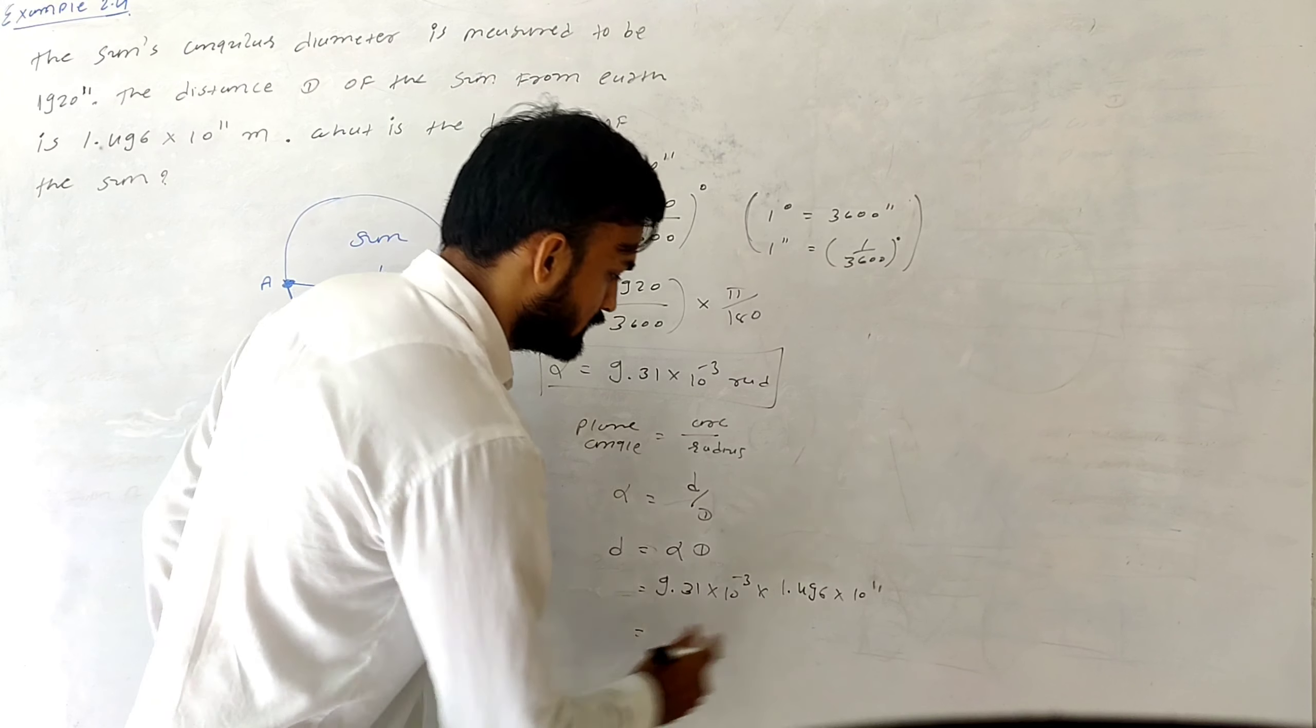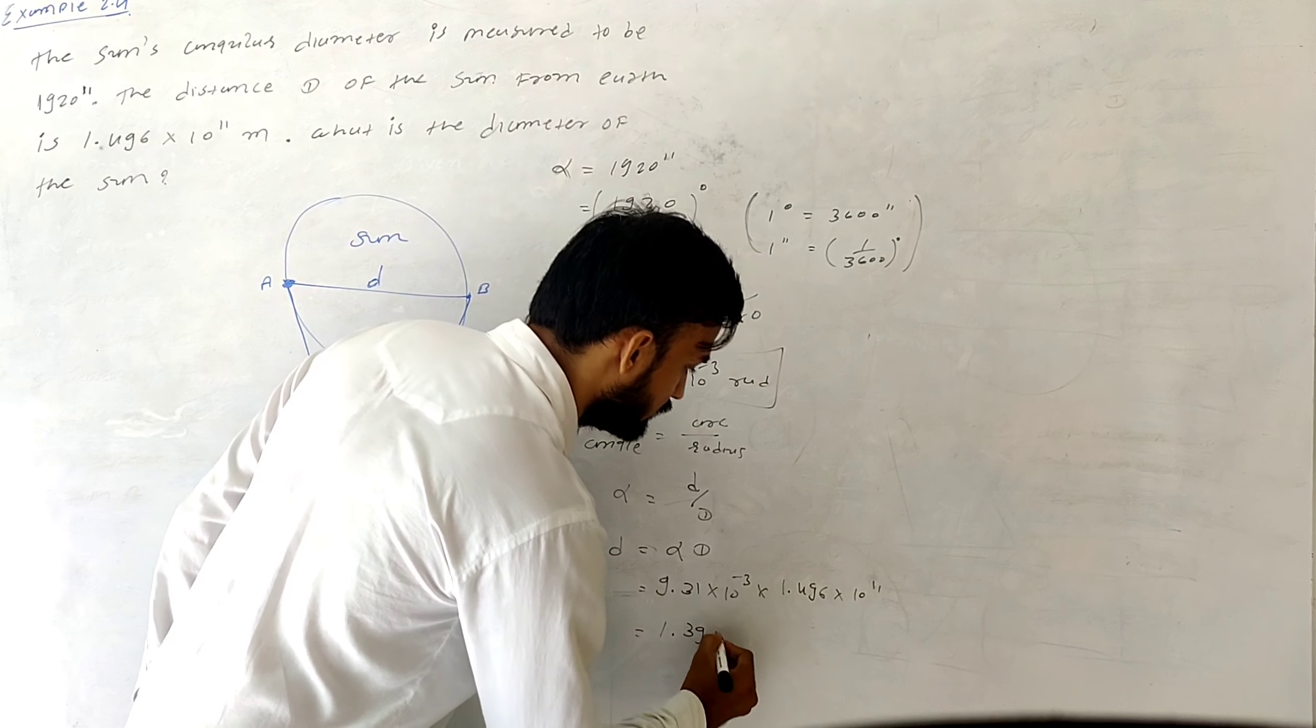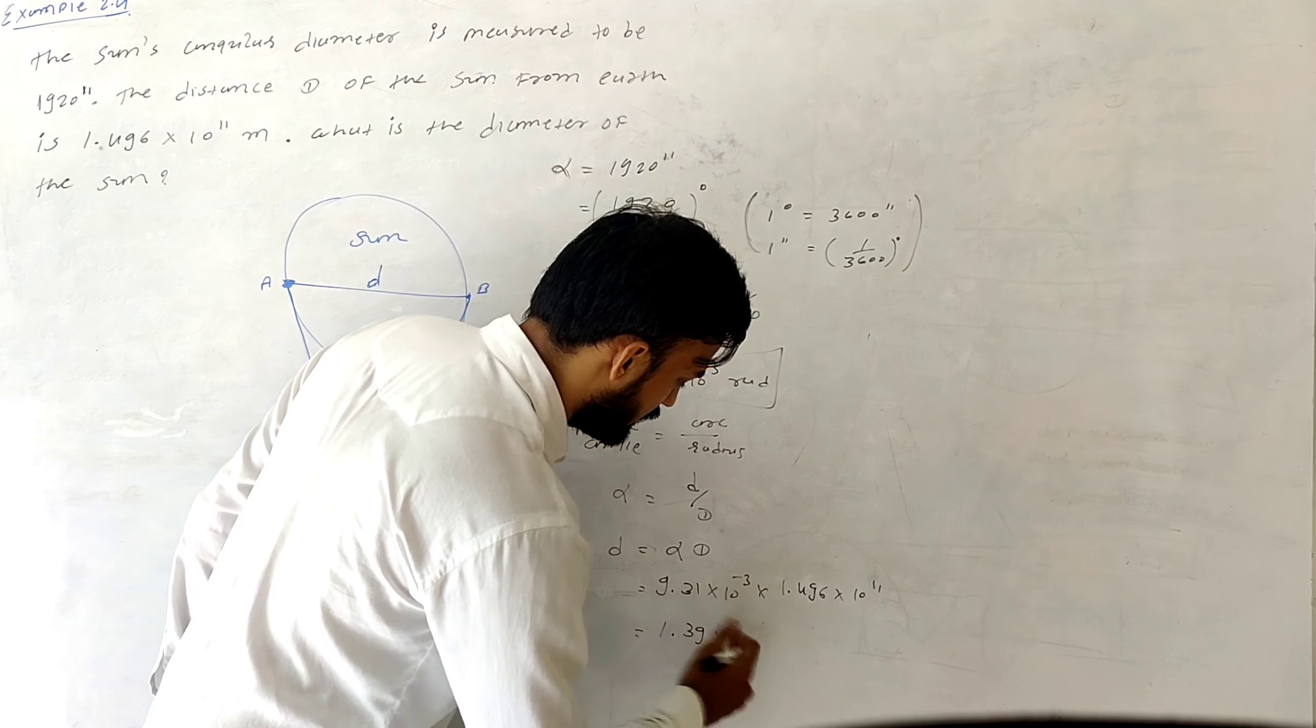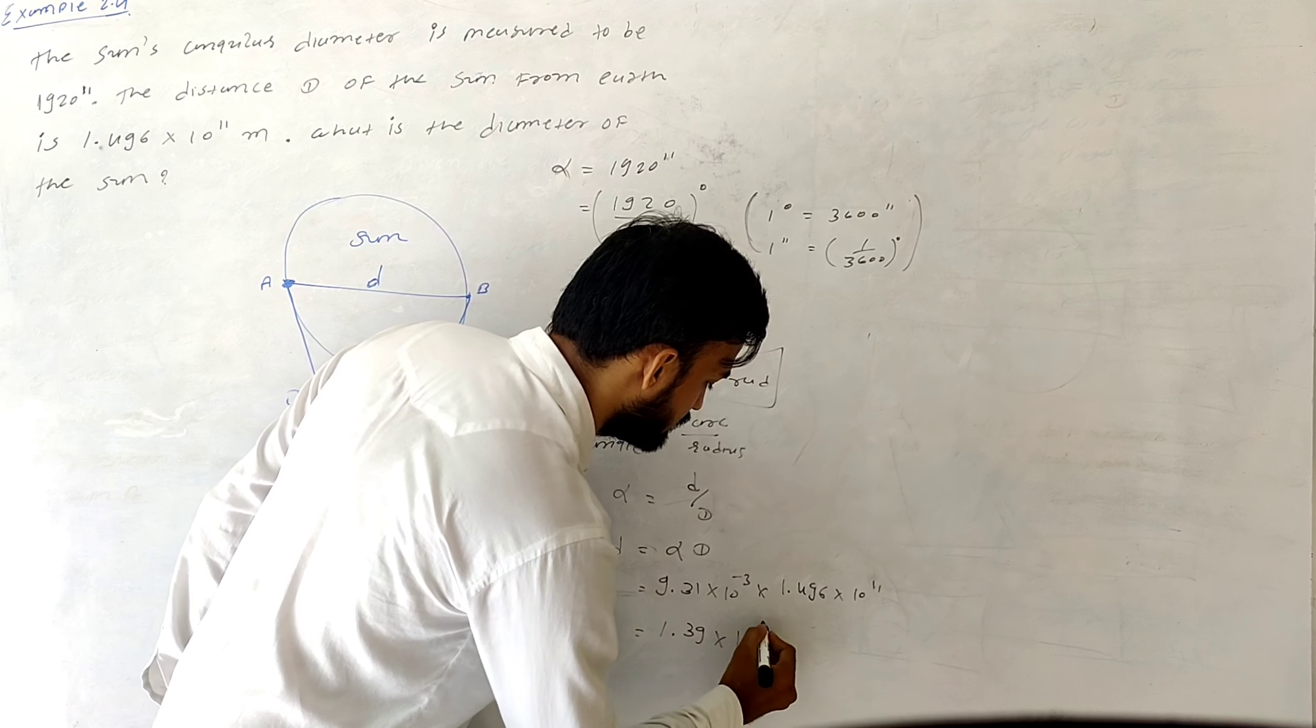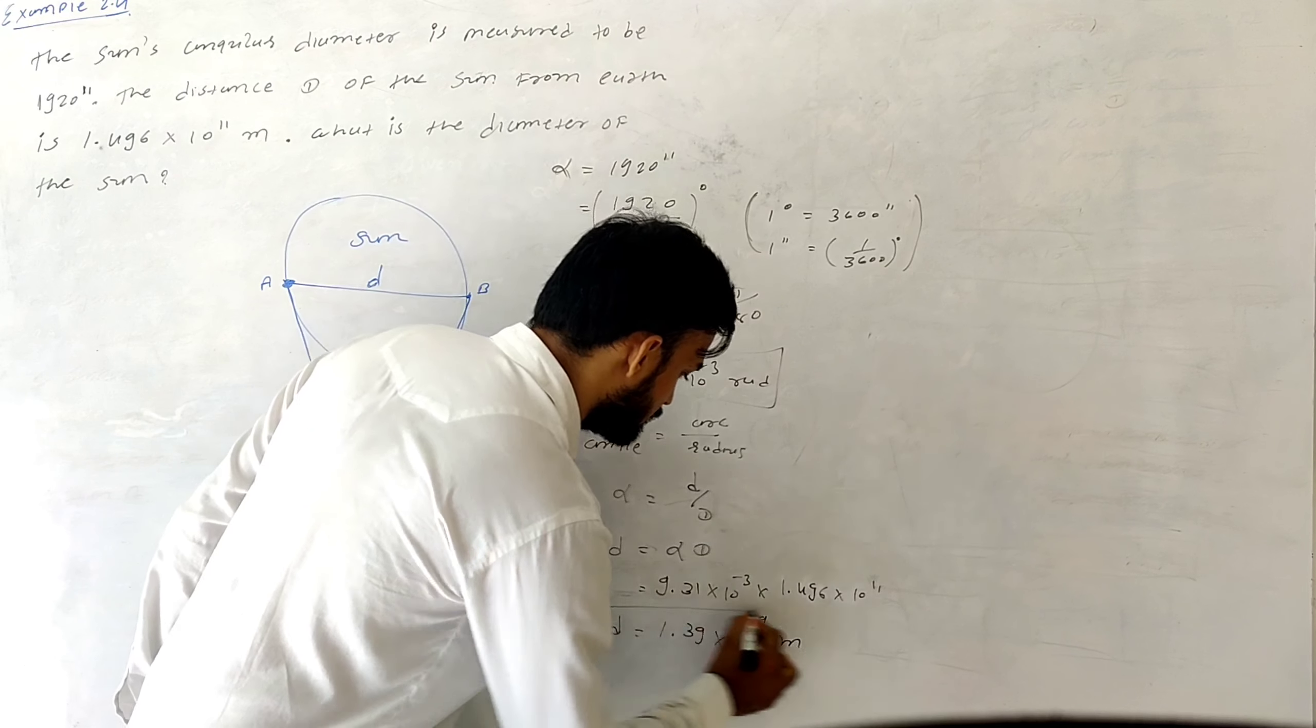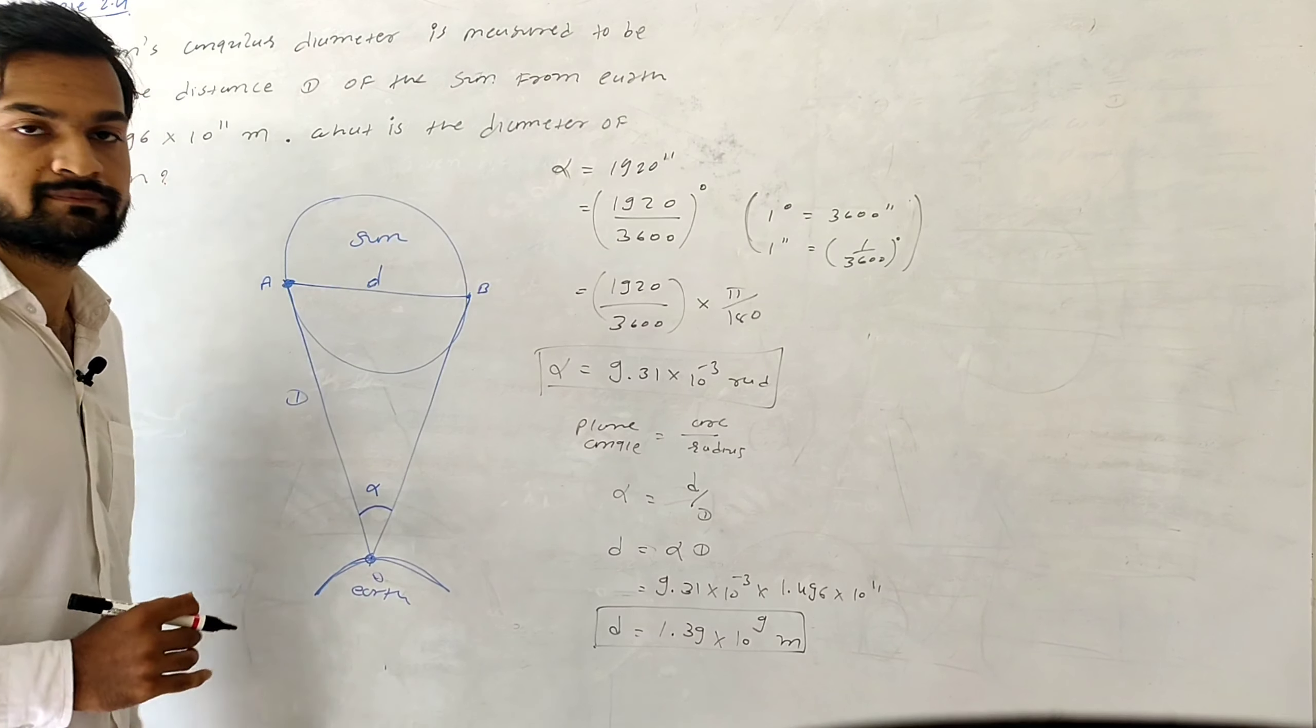So after simplifying it, I will get the answer 1.39 × 10^8, and after shifting one decimal I will get 1.39 × 10^9 meters. So this is the size or diameter of the sun.